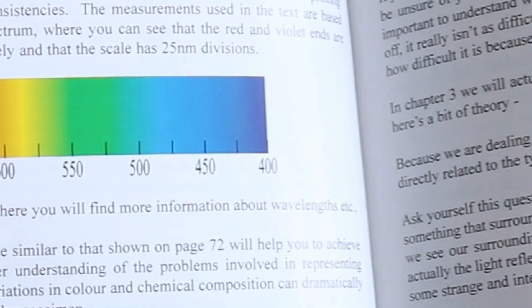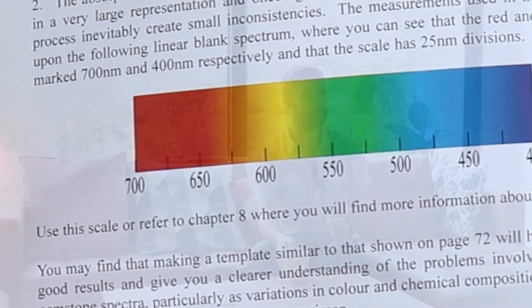One thing I find very interesting about color from a scientific point of view is that there are visible colors that have a measurable number, but some colors we're capable of seeing don't actually exist because they don't fit on the visible spectrum — our brain creates them. Purple is one of those things. Violet has a number, red has a number, but purple does not. Our brain creates it. Some gemologists actually like to call it a sensation.